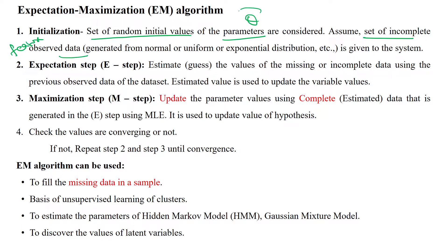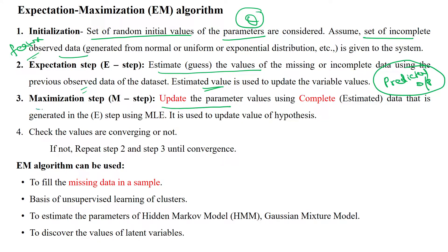Using these initial parameter values and features, we can estimate the values. The estimated value gives some output — that is the predicted output. The output is predicted for each and every sample. This output may have some error; we don't know that yet, so we want to improve performance by applying a number of iterations. This is iteration number one, where we have predicted the output.